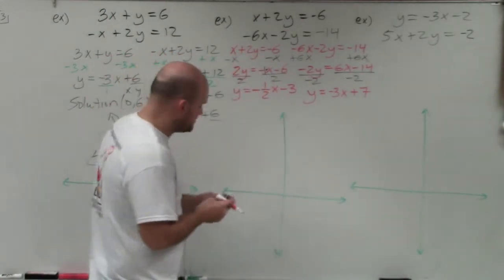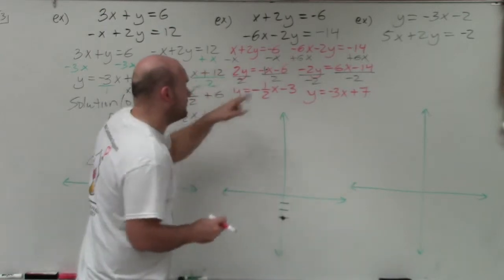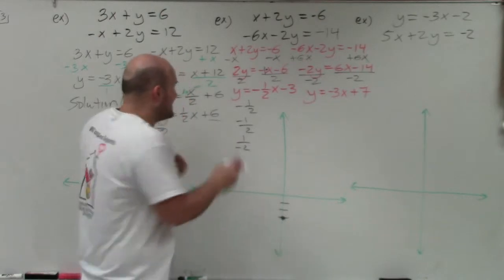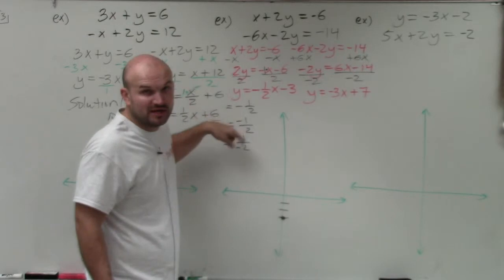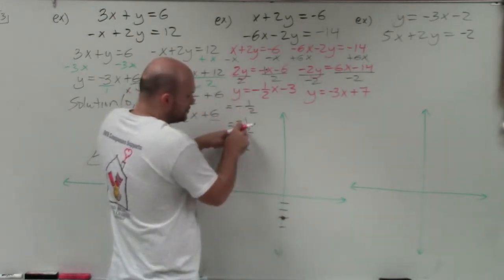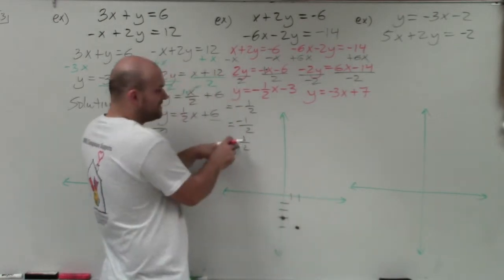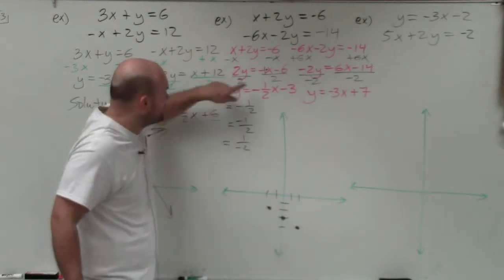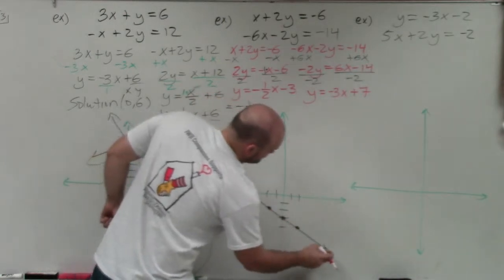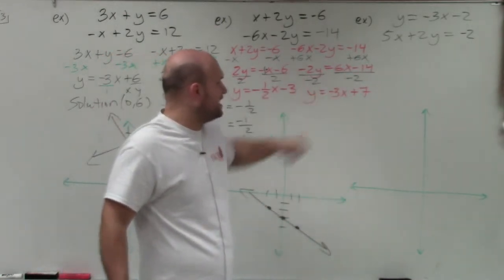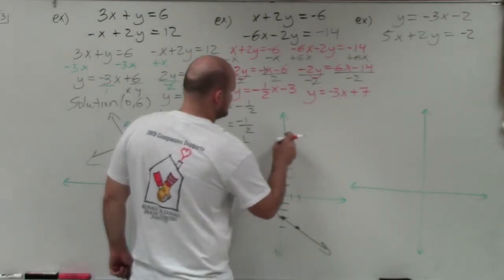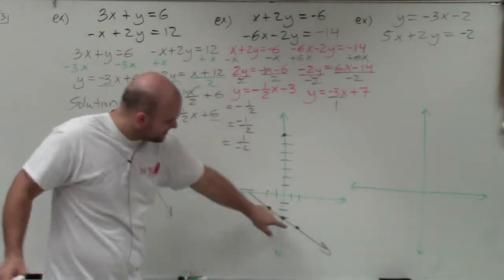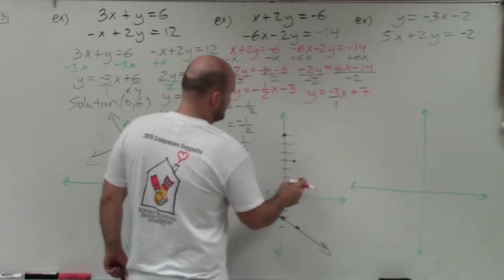Let's graph the first equation. I go to y-intercept negative 3 and make a dot. For the slope, negative 1 half — with the negative in the numerator, go down 1 to the right 2; with the negative in the denominator, go up 1 to the left 2. Both give you points on the same line. For the second equation, y-intercept is 7, so I go up 7. The slope is negative 3 over 1, so I go down 3, over 1 repeatedly.